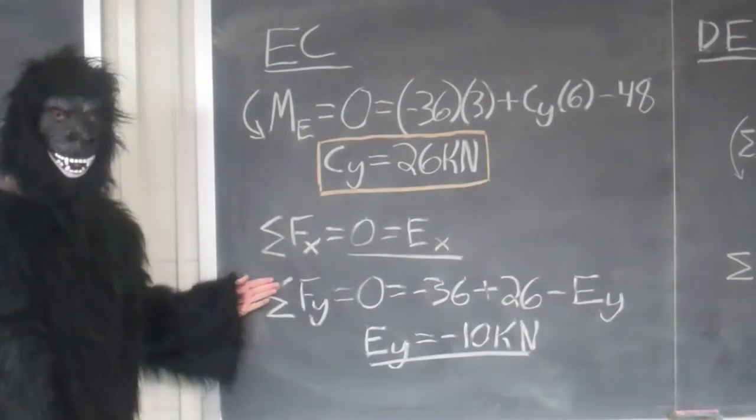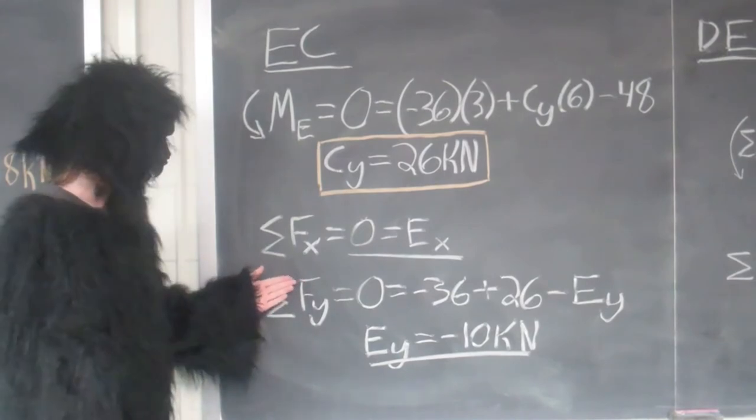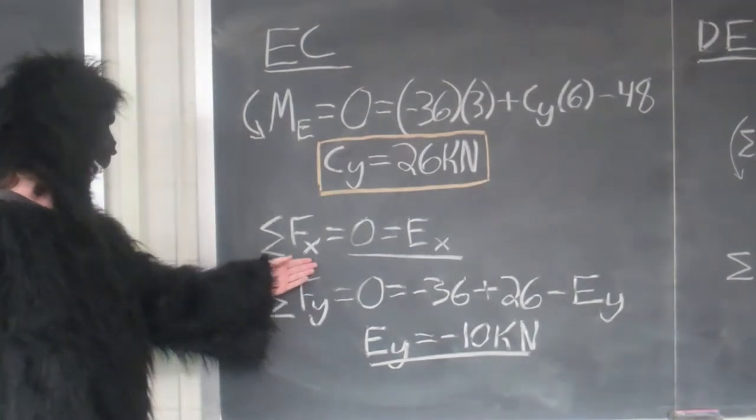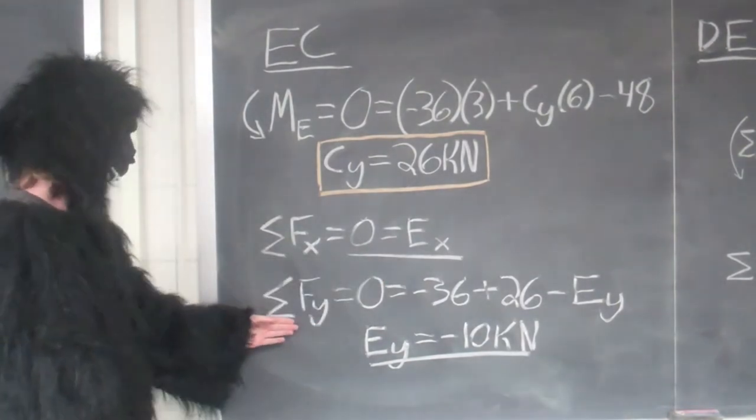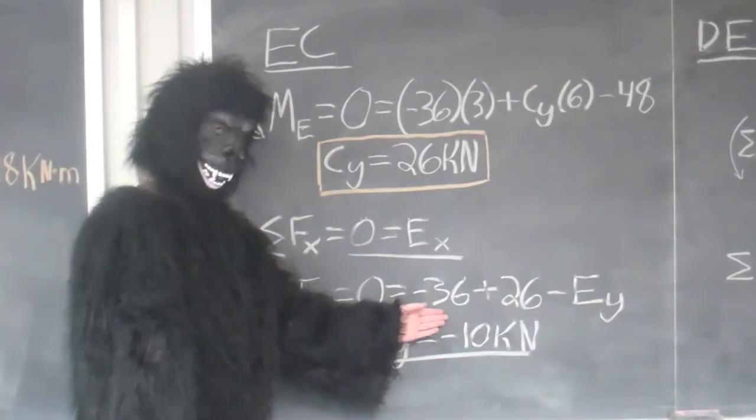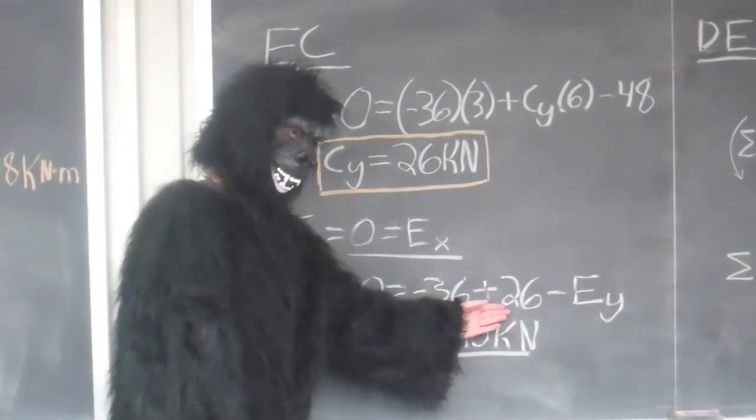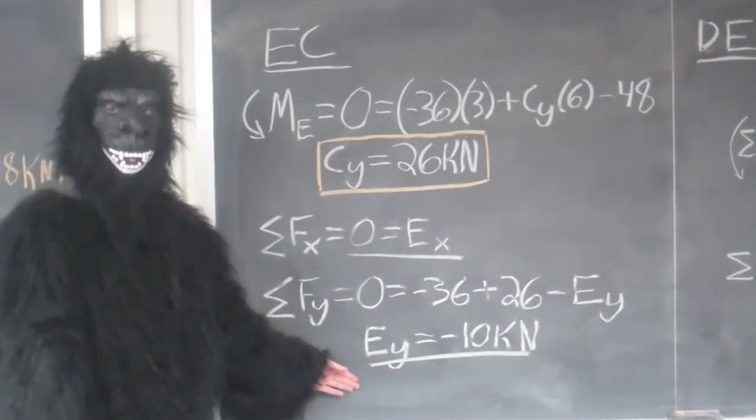In order to solve for our segment DE, we need to find the forces at EX and EY. Doing the sum of the forces in F of X, we get that EX is equal to 0. To solve for FY, we have the force of our distributed load plus CY minus EY, giving us that EY is equal to negative 10 kN.